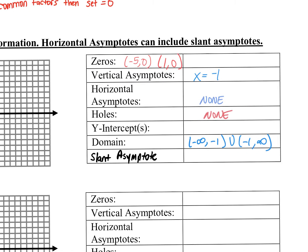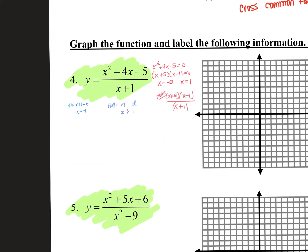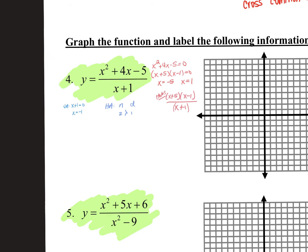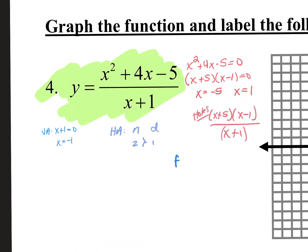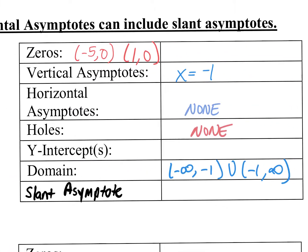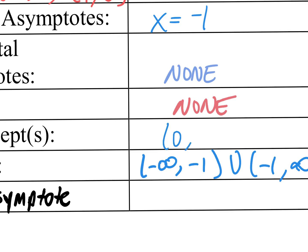How about our y-intercept? Plug in 0 for all x's and evaluate. So f(0) equals 0 squared plus 4 times 0 minus 5 over 0 plus 1, which gives negative 5 over 1, which is negative 5. So my y-intercept is written as the ordered pair (0, negative 5).